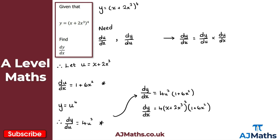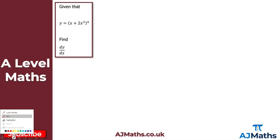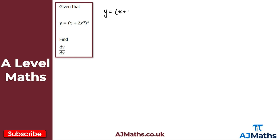Now let me show you a quicker way to do this. Starting again with y equals (x + 2x³)⁴, I use the chain rule without explicitly writing out du/dx and dy/du. First, take the power and multiply by the coefficient in front of the bracket — here that's 1 — giving 4 times 1 equals 4. Multiply by the bracket (x + 2x³), then reduce the power by 1, giving a power of 3.